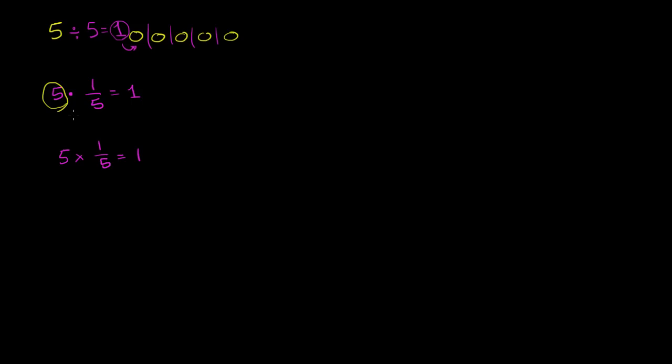and most of the time when people talk about inverses in mathematics, they're talking about the multiplicative inverse, then I'm going to get one. So five times one fifth is equal to one, but that's just because five times one fifth is the same thing as five divided by five.